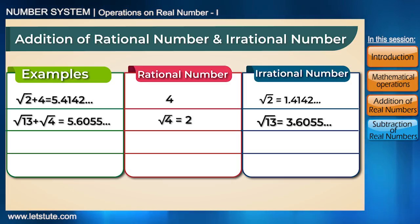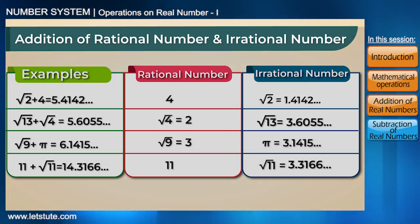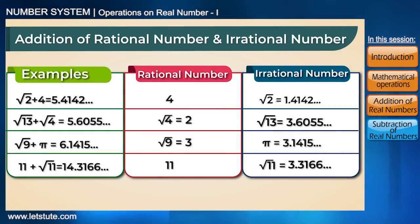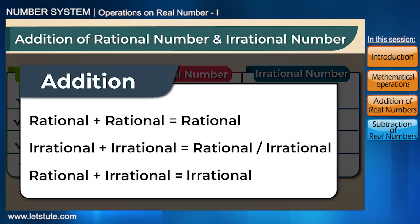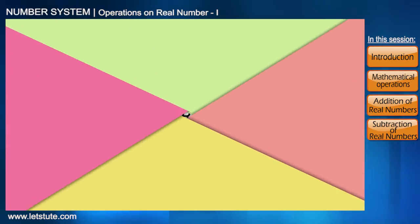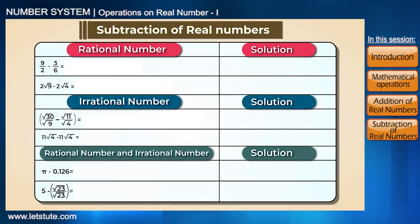We can see in other examples that we also get irrational solutions. Hence, the addition of a rational number and an irrational number is always irrational — this is our third property. This was for addition of real numbers. The same results are obtained for subtraction. Why don't you try a few subtractions and verify whether these properties hold true for subtraction as well?